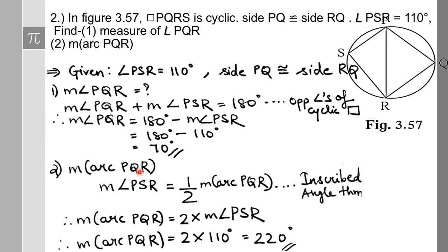Second sub-question: measure of arc PQR. Angle PSR is an inscribed angle; by the inscribed angle theorem, measure of angle PSR equals half the measure of arc PQR. So measure of arc PQR equals two times measure of angle PSR, which is 2 into 110 degrees, giving measure of arc PQR as 220 degrees.